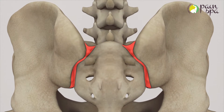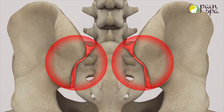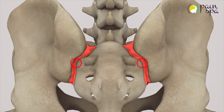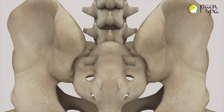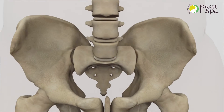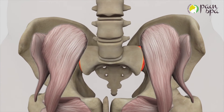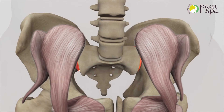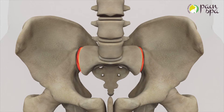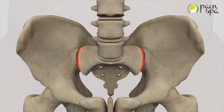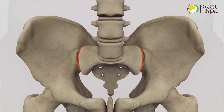Sacroiliac Joint Dysfunction refers to pain in these joints when they move either too little or too much. Reduced movement can result from tense muscles surrounding the sacroiliac joints or from wear and tear changes in the joints due to arthritis. Hypermobility, or too much movement in the sacroiliac joints, is a result of loose ligaments supporting the joints.